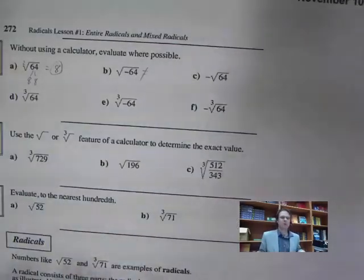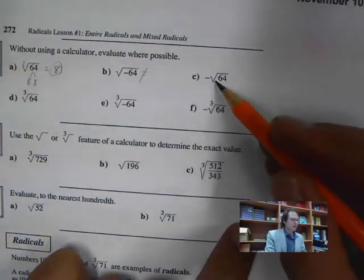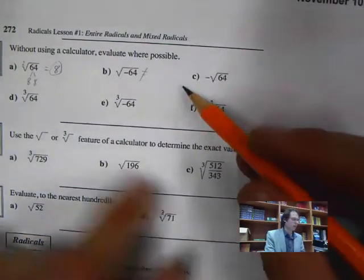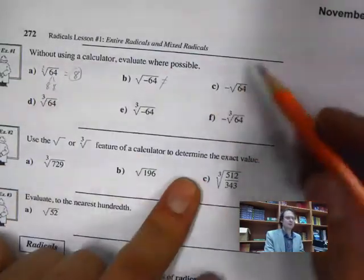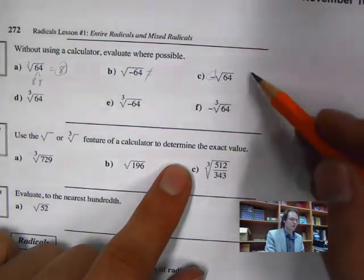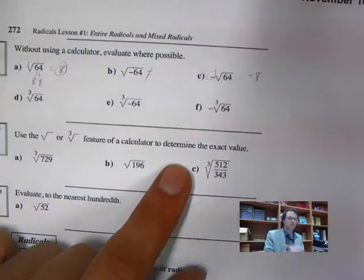The next one has the negative on the outside: negative square root of 64. The square root of 64 is 8, then we multiply by negative 1, so that gives us negative 8.